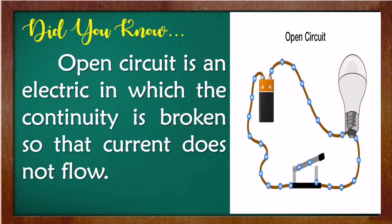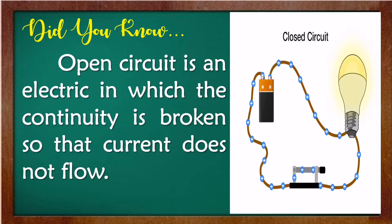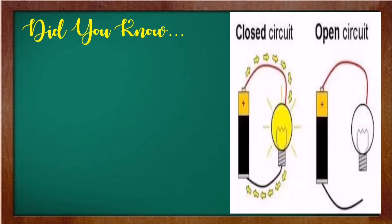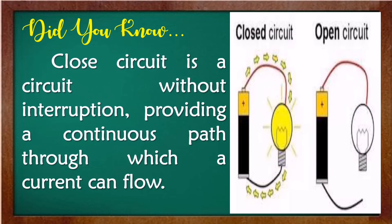Open circuit is an electric in which the continuity is broken so that the current does not flow. Just look at the picture. We have here closed circuit and open circuit. Closed circuit is a circuit without interruption, providing a continuous path through which a current can flow.